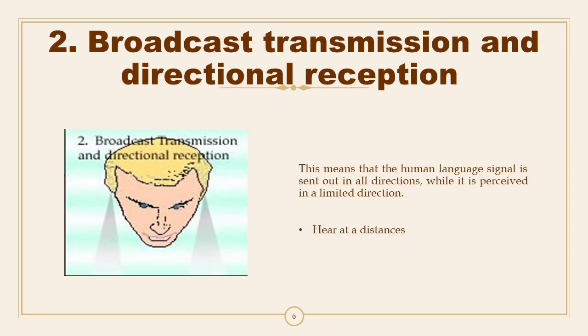Second: Broadcast Transmission and Directional Reception. This means that the human language signal is sent out in all directions while it is perceived from a limited direction at heard distances. For example, in spoken language, sound propagates as a waveform that expands from the point of origin — the mouth — in all directions. This is why a person can stand in the middle of a room and be heard by everyone, assuming they are speaking loudly enough. However, the listener hears the sound as coming from a particular direction and is notably better at hearing sounds coming from in front of them than from behind.